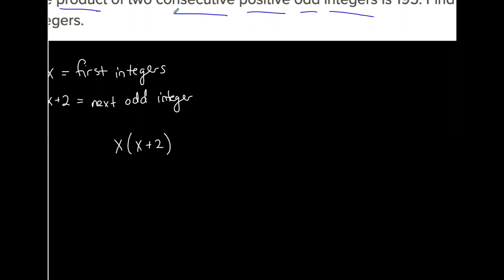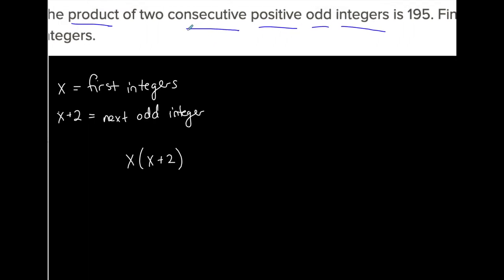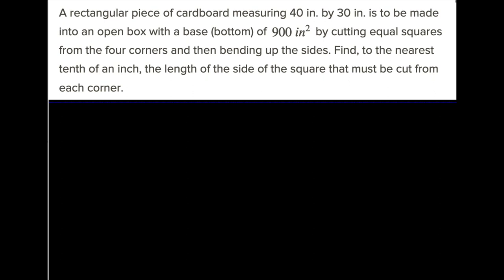Their product is X times (X plus two), and the product of these two odd integers is 195. So we set up an equation for this situation.